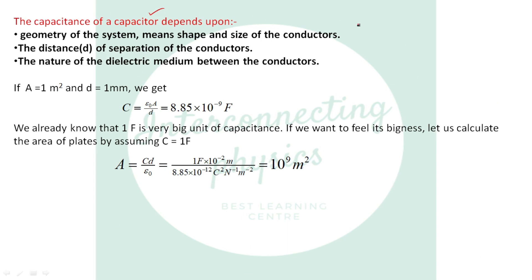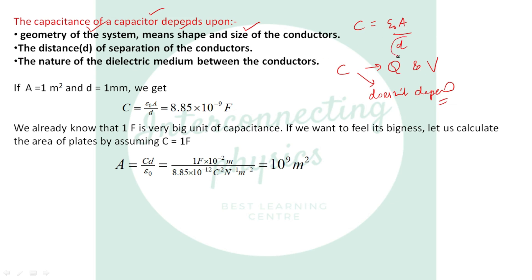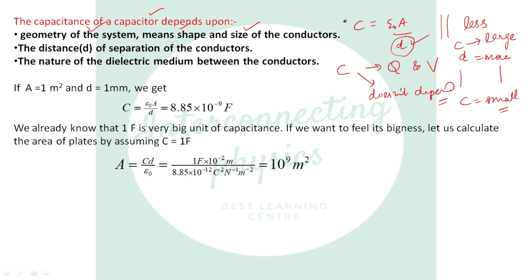The capacitance C equals epsilon₀·A/D depends upon the geometry of the system. We already established that capacitance doesn't depend upon charge or potential difference. It depends on: number one, the shape and size of the conductors; number two, the distance of separation of the conductors — if the distance between conductors is less, capacitance will be large; and if D is more, capacitance will be small, because C and D are in inverse relation. Number three, the nature of the dielectric medium between the conductors.